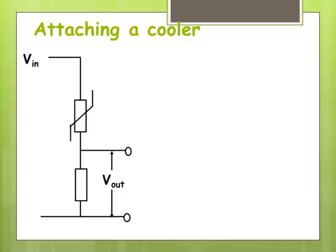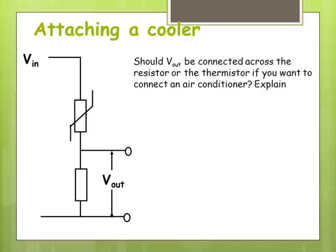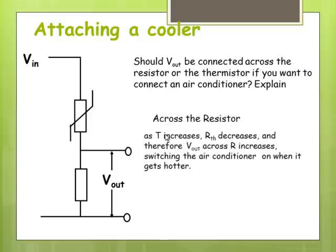And, of course, the reverse. If you're attaching a cooler, should it be across the resistor or the thermistor? In this case, it's going to be across the resistor. Why? Because as the temperature increases, the resistance of the thermistor decreases. Therefore, V out across the resistor increases, which will switch on the air conditioner when it gets too hot.